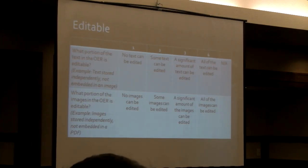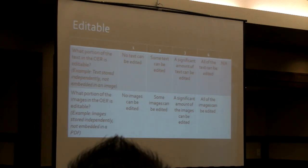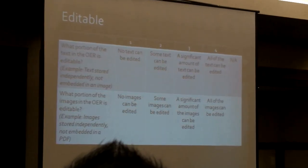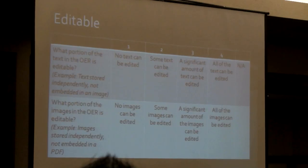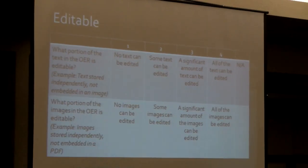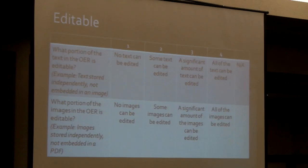Next is editable — what portion of the text in the OER is editable? A nice example is a PDF where I scan a syllabus in. It treats it as an image. I can't cut and paste it, I can't take it through Acrobat Professional. It's an image — it's stuck. It is not meaningfully editable. Same thing with images that have a watermark in them.